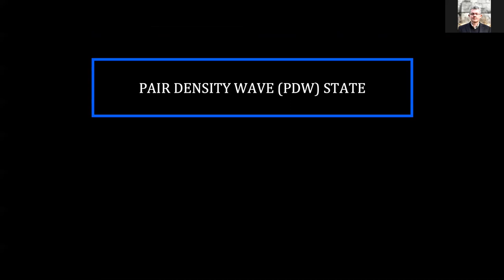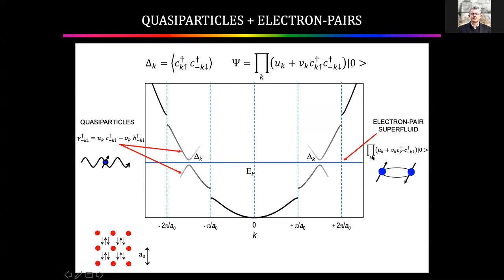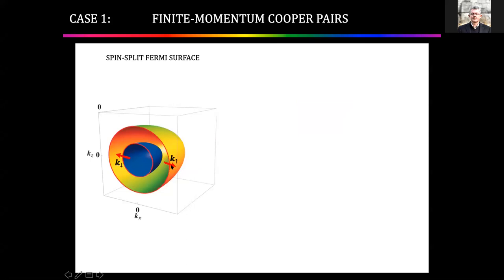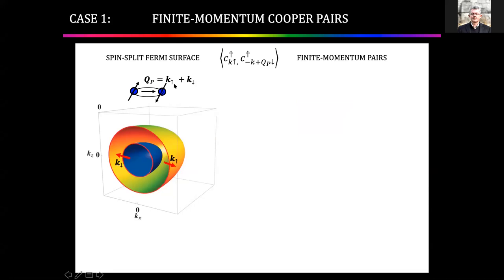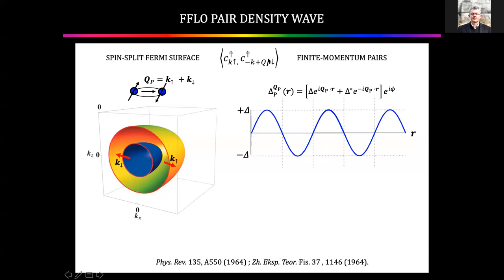Crystals of electron pairs are also possible. Imagine splitting the Fermi surface such that the wave vector of spin up and spin down are different. When you make the Cooper pair, you bind two objects whose momentum is not opposite, so the pair has its own momentum. When you condense the pairs, you get an order parameter with a finite momentum. In quantum mechanics, an object with momentum has a wavelength, so this state has a real space periodicity of 2π over the wave vector. This is the Fulde-Ferrell-Larkin-Ovchinnikov state, which should modulate the pairing condensate periodically in space.